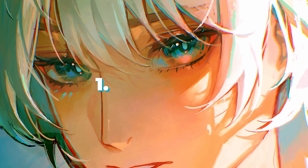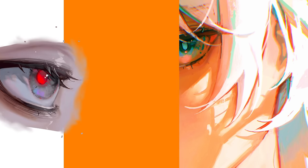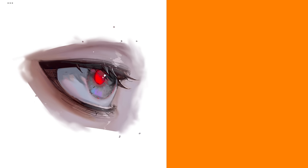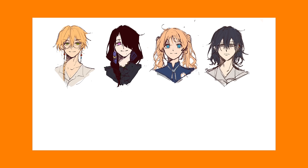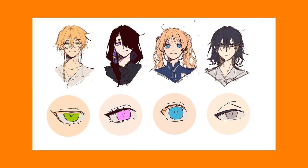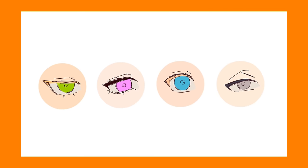First, the eyelid. The eyelid is usually the main factor in determining and showing a type of personality at first glance. Not only that, with just the eyelid, we can make many combinations of eye types by playing around with different types of eyelid personalized characteristics. The same can be said with the lower eyelid as well.